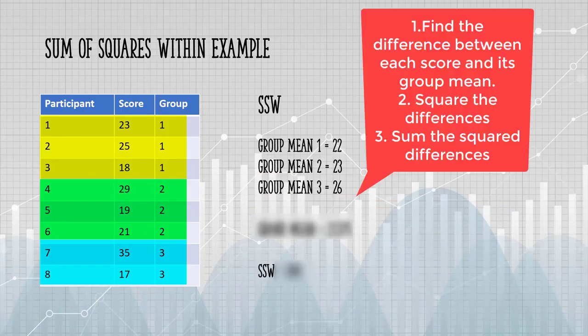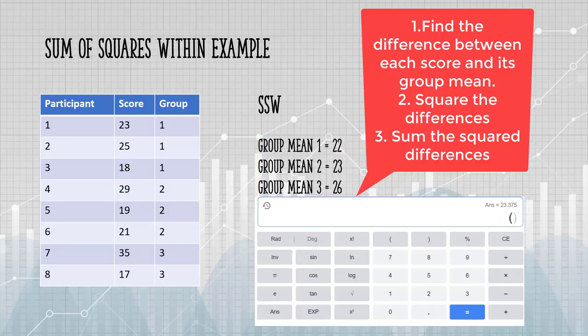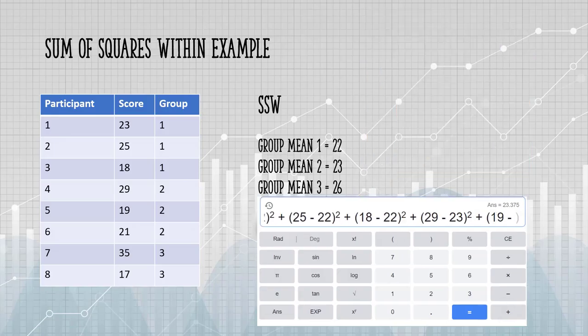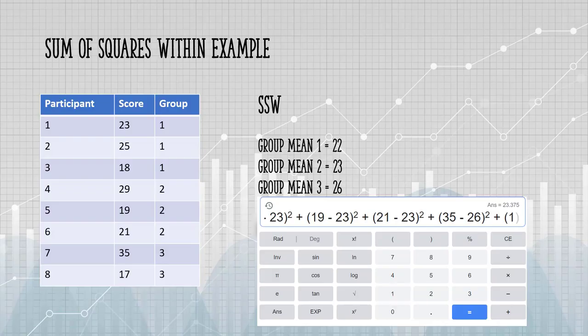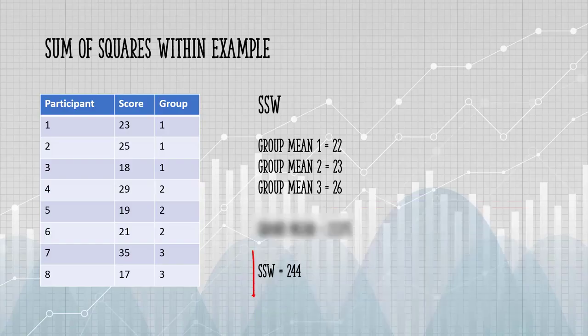Now we can calculate the sum of squares within. We're going to take each data point and compute the difference between the score and the group mean. We're going to have to do eight calculations, one for each score. Those differences get squared, and then we're going to add up all of those squared differences to get SSW. For eight data points, the calculation gets a little lengthy, so you can probably see why it's a good idea to use software. Most ANOVA tests are going to have a lot more than eight points. This calculation for SSW gives us 244.